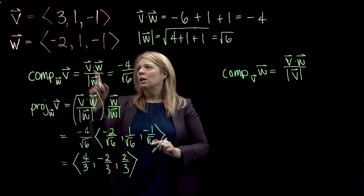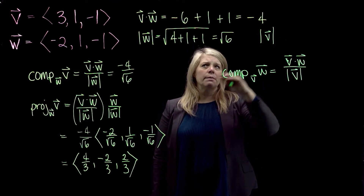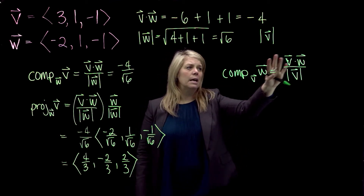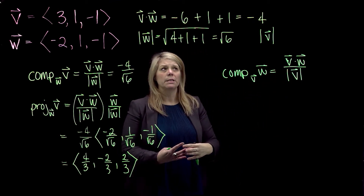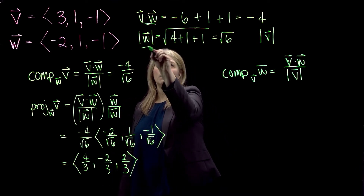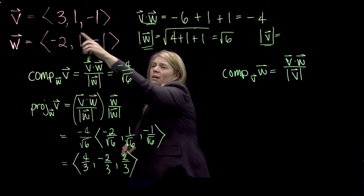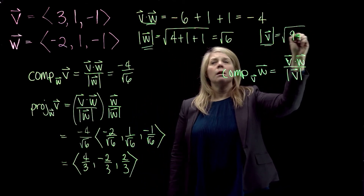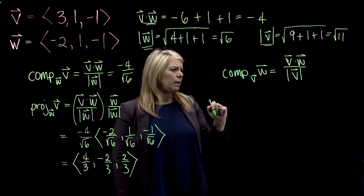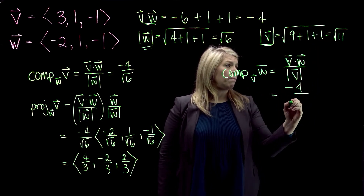I need the magnitude of V: the square root of 3 squared (9) plus 1 squared (1) plus negative 1 squared (1), giving the square root of 11. So the component of W along V is negative 4 over square root of 11. Again, the negative tells us the vectors are in opposite directions, and the magnitude of this number tells you how long that component is.